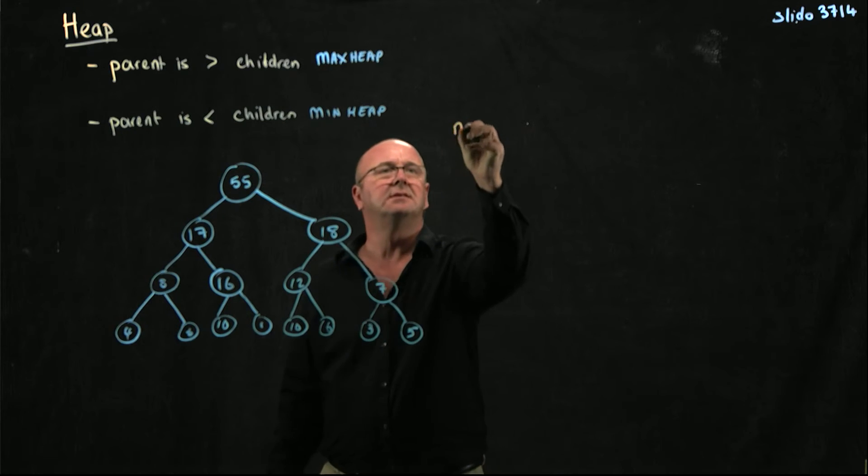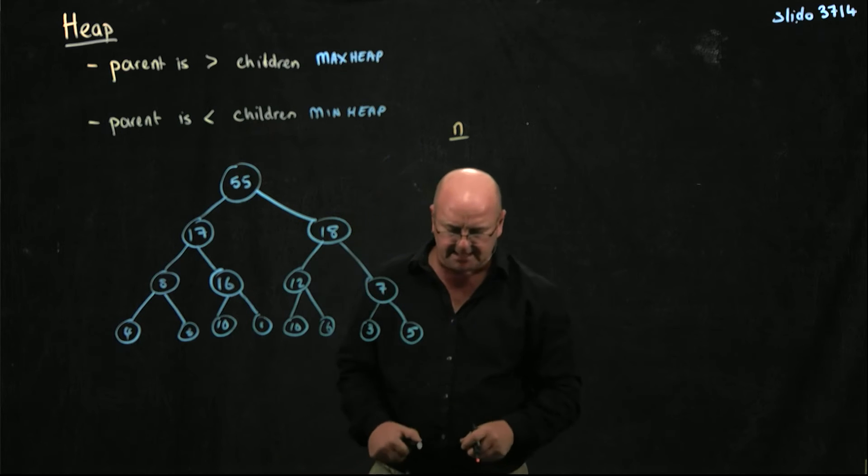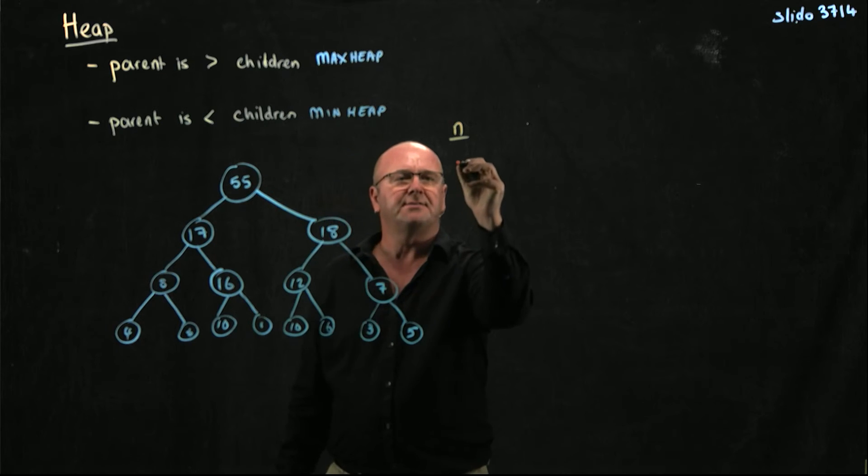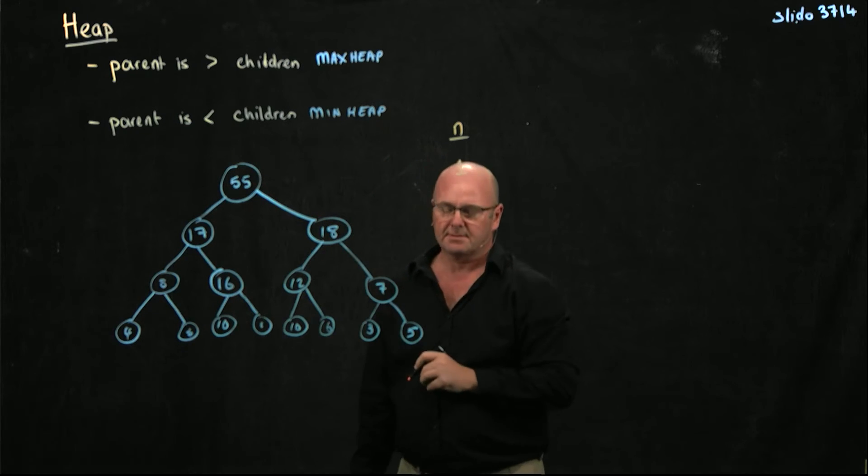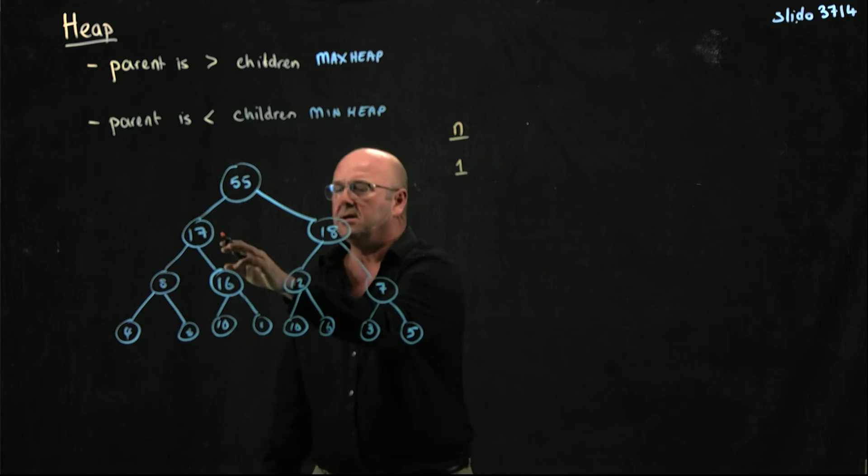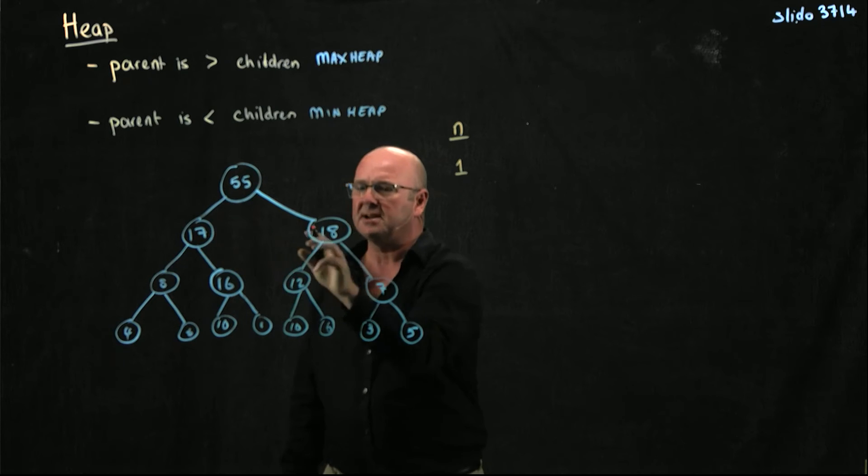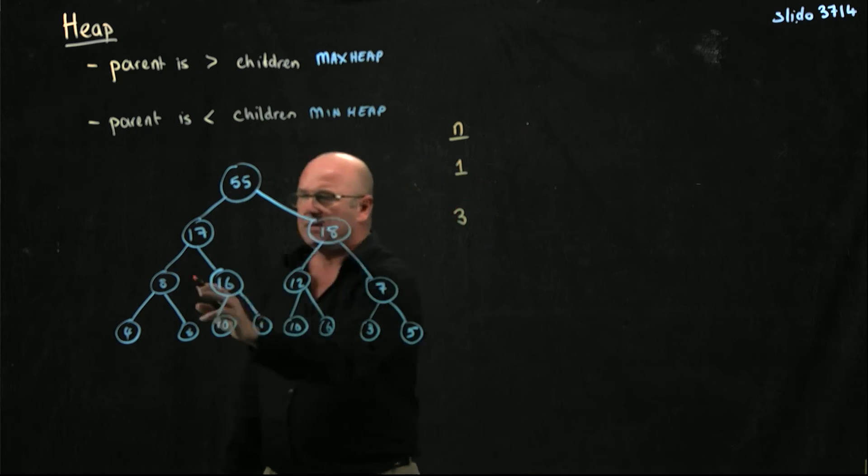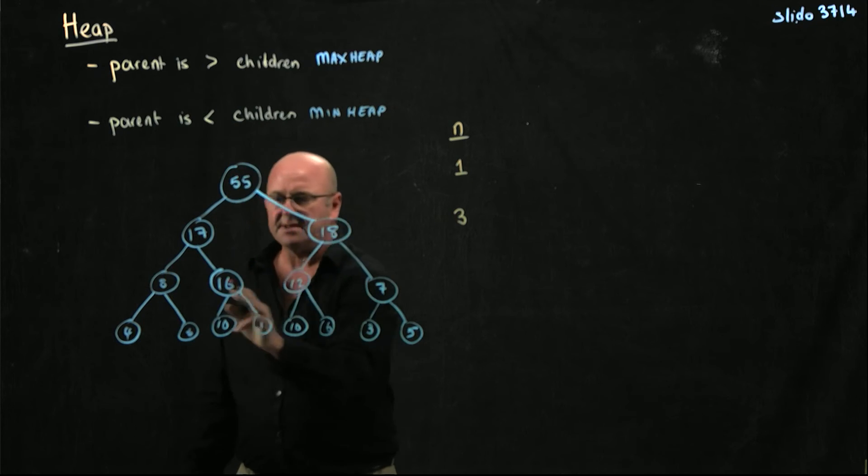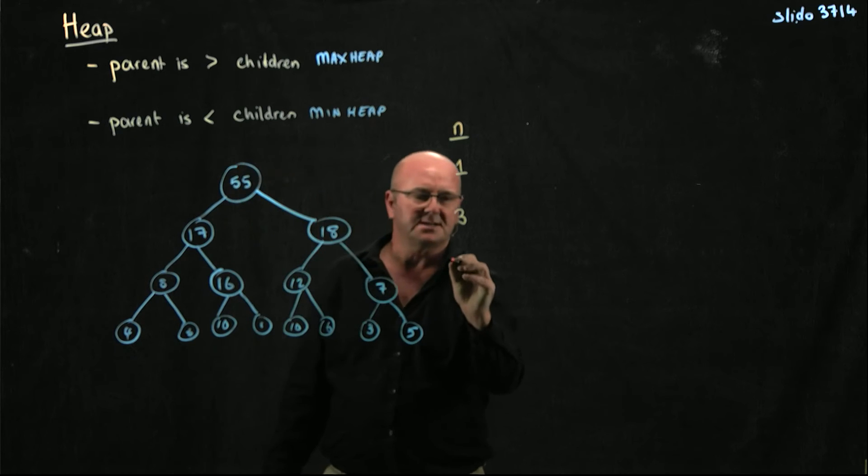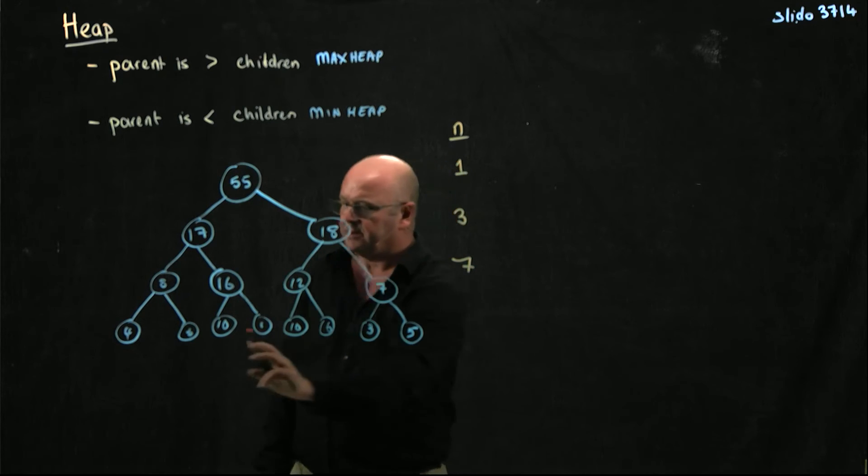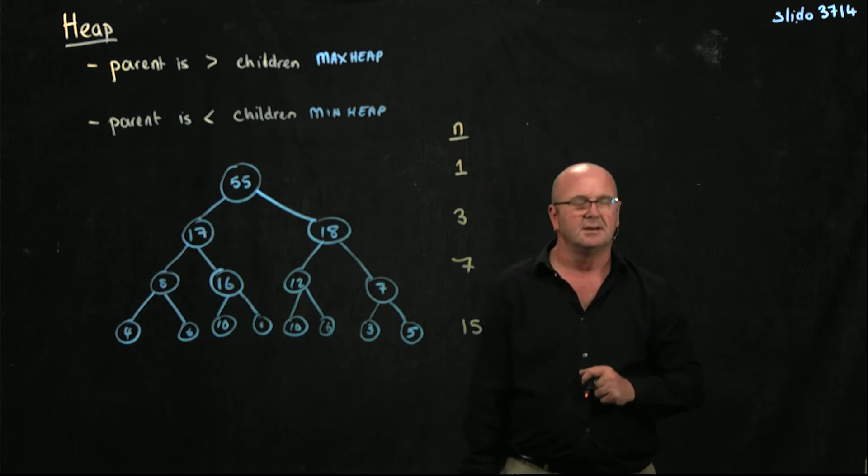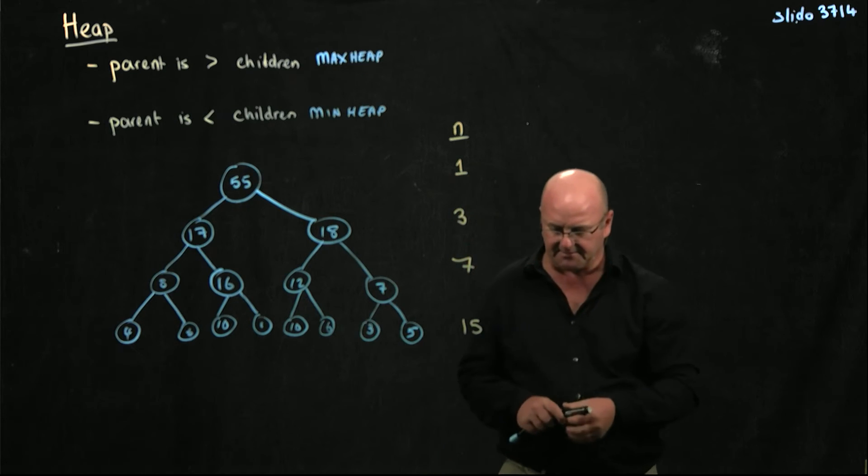Now, notice that in our max heap, actually in any heap, in any tree, on this level we have one element. On this level, we've got one from the root plus these two, so three things. On level two, we've got these four plus these three, so we've got seven. And then on the next level down, we've got a total of 15 items. Remember, when I was numbering the tree in the traversals, we always ended up on 15.